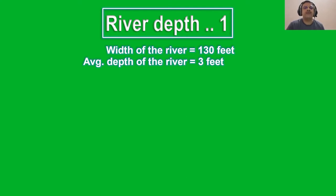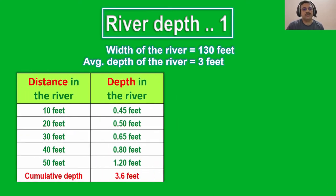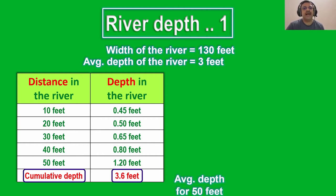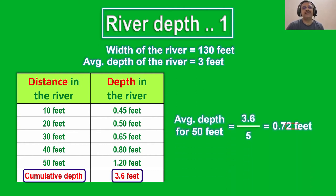The data collected for every 10 feet of distance moved across the riverbed is as follows. From this table we see that we have taken five measurements and the cumulative depth obtained was 3.6 feet. Therefore the average depth for these 50 feet across the riverbed is a mere 0.72 feet. This is way lower than the 3 feet average that was indicated.